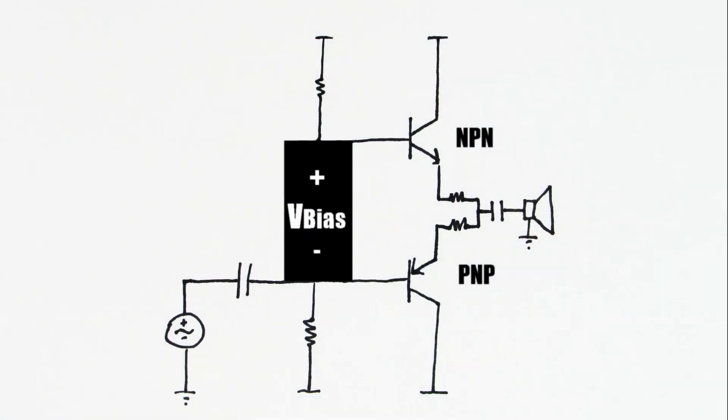Here's a generic class AB amplifier schematic. Going from left to right we have our voltage source or bias in our output stage.